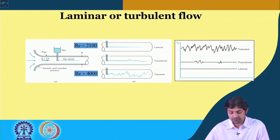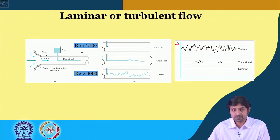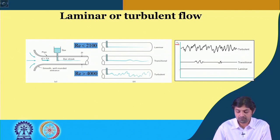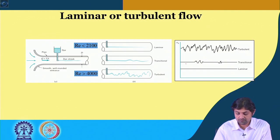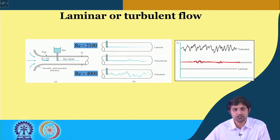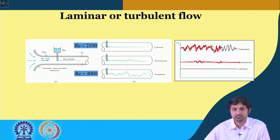The velocity u in the x-direction has been plotted with respect to time. For laminar flow it is a straight line. For transitional flow there are some disturbances at some points, then it becomes straight again. For turbulent flow there are fluctuations right from the beginning at every point — this is completely turbulent flow.